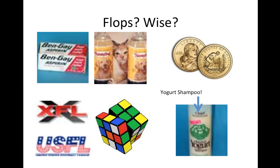Here are some products — were they flops or wise products made by entrepreneurs who wanted to take a chance? Most of these have certainly been flops. The top left one is Bengay Aspirin. Bengay was a cream used for muscle soreness with a really strong smell — a very successful product. So they thought they'd give Bengay Aspirin a shot, but it didn't work. The association with the smell, maybe the name — just not good.